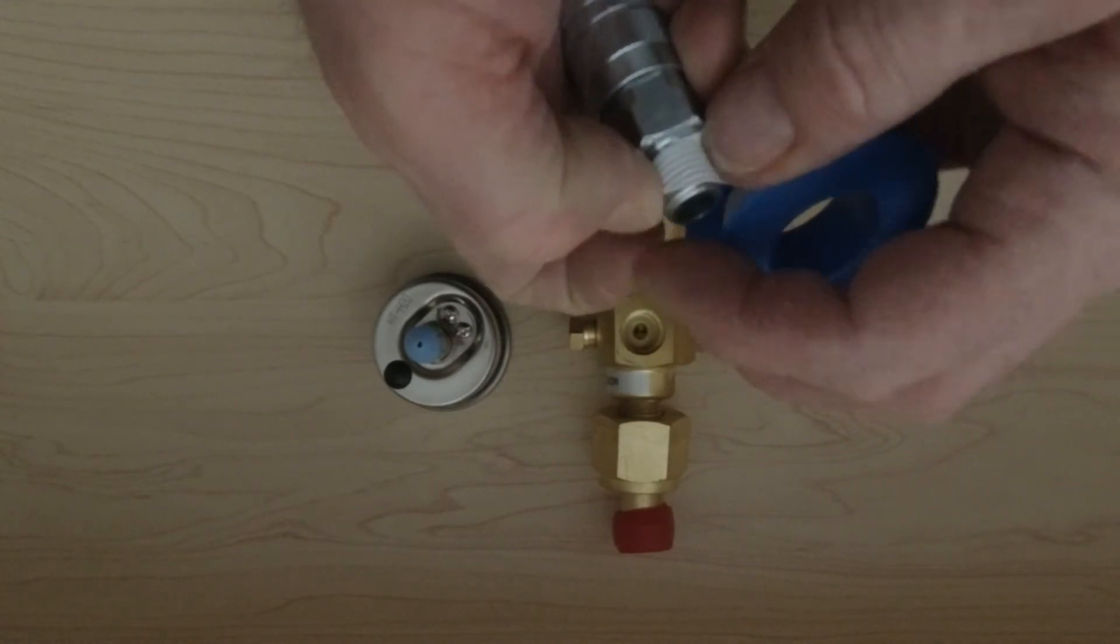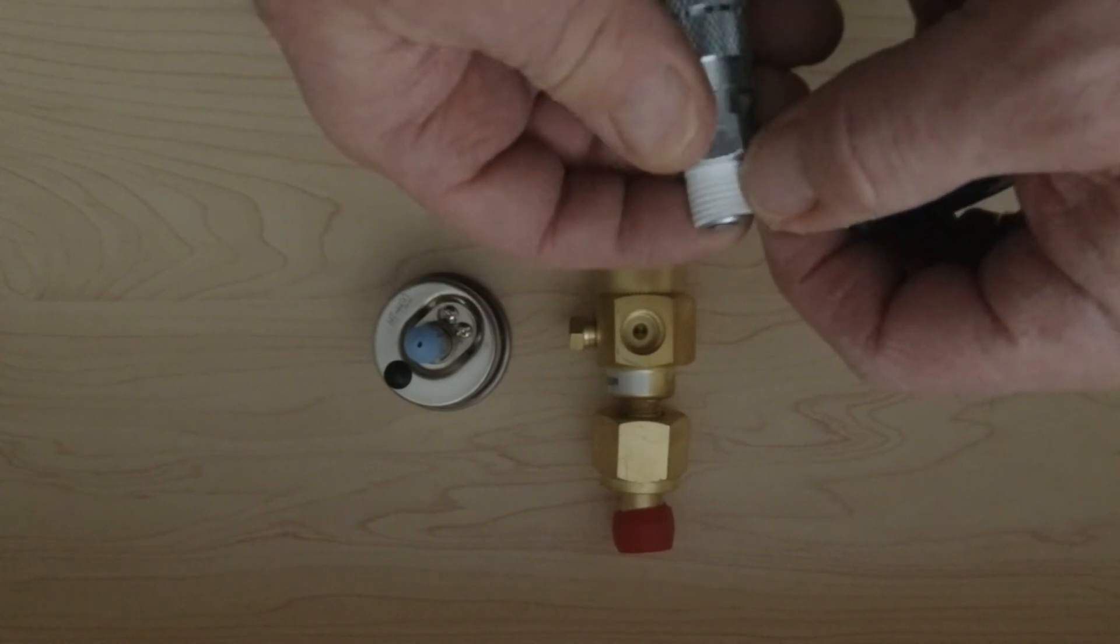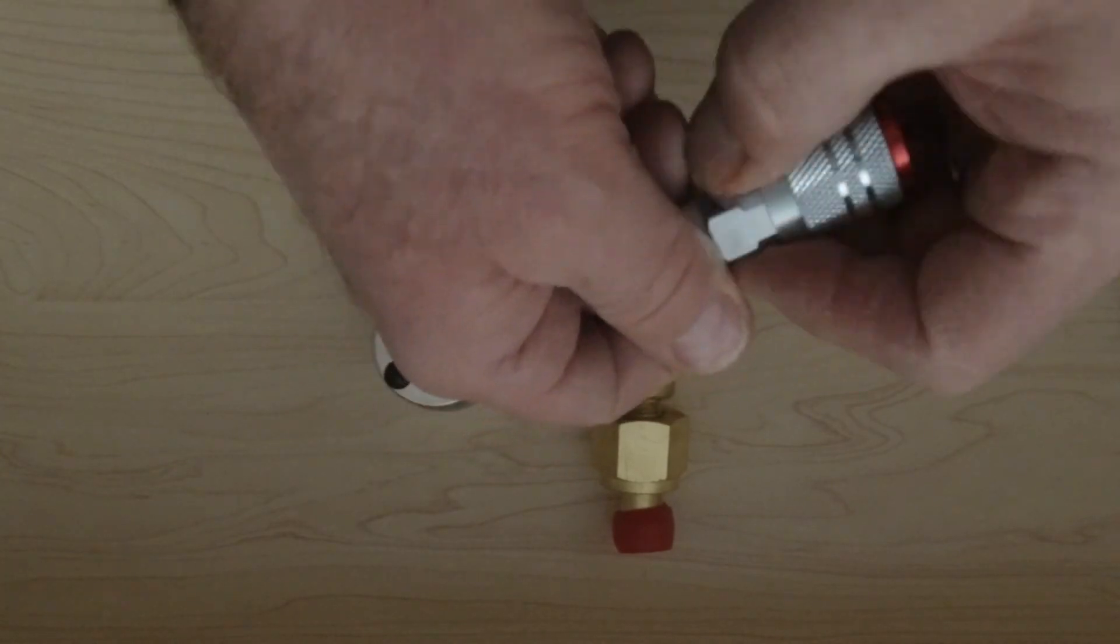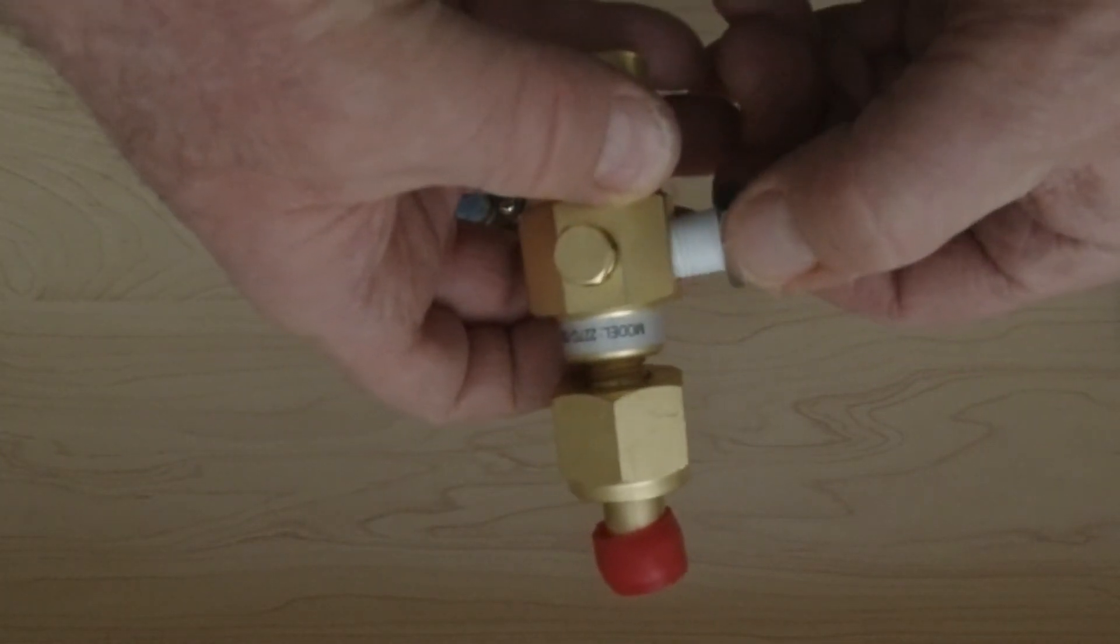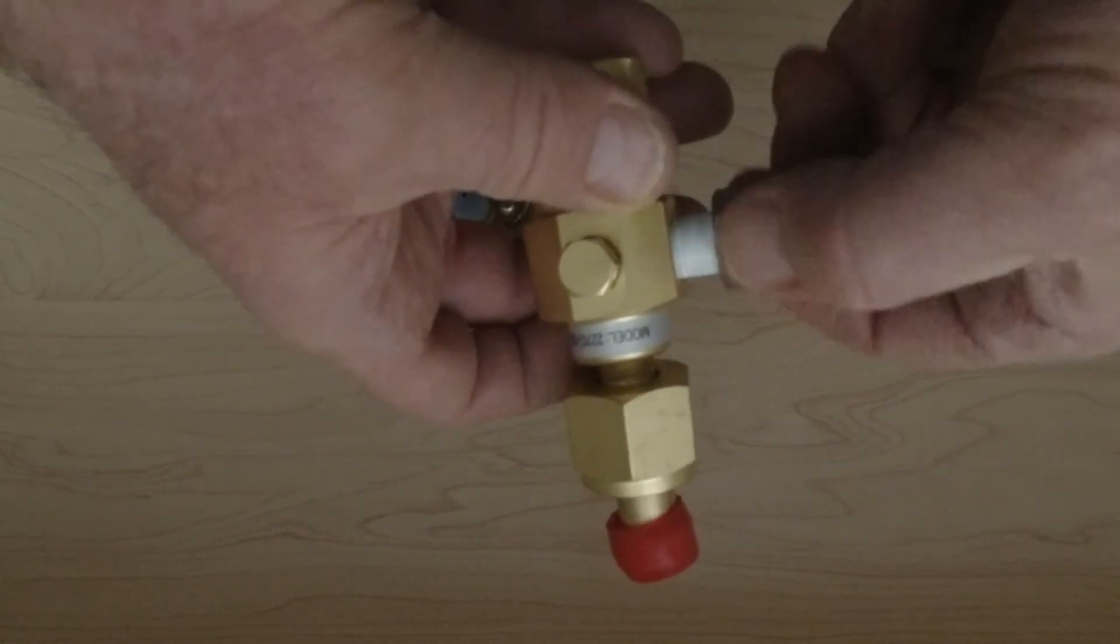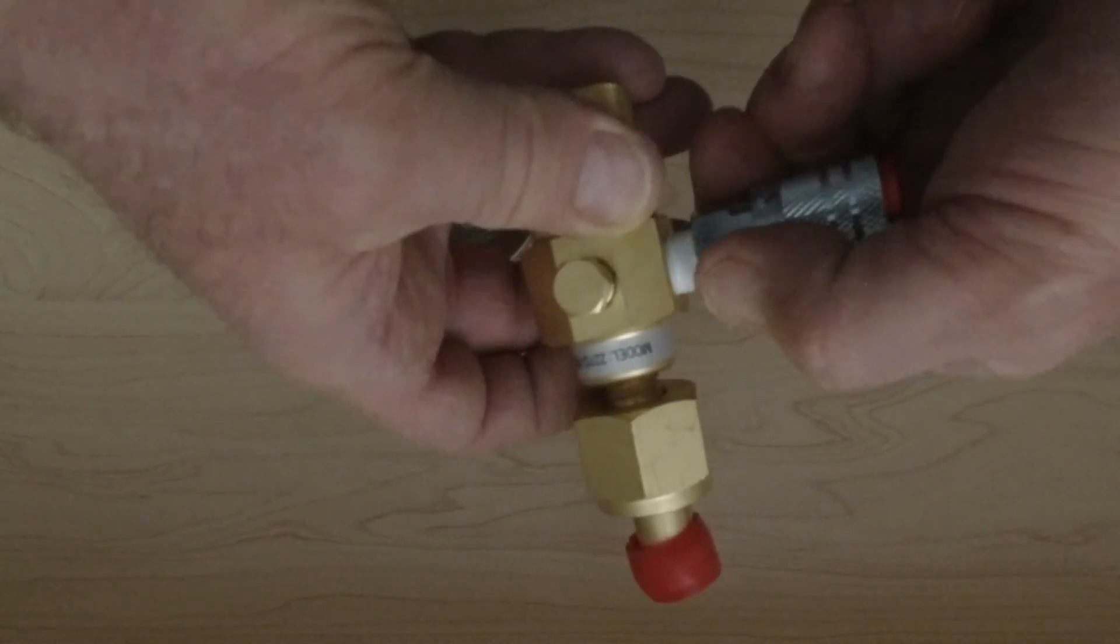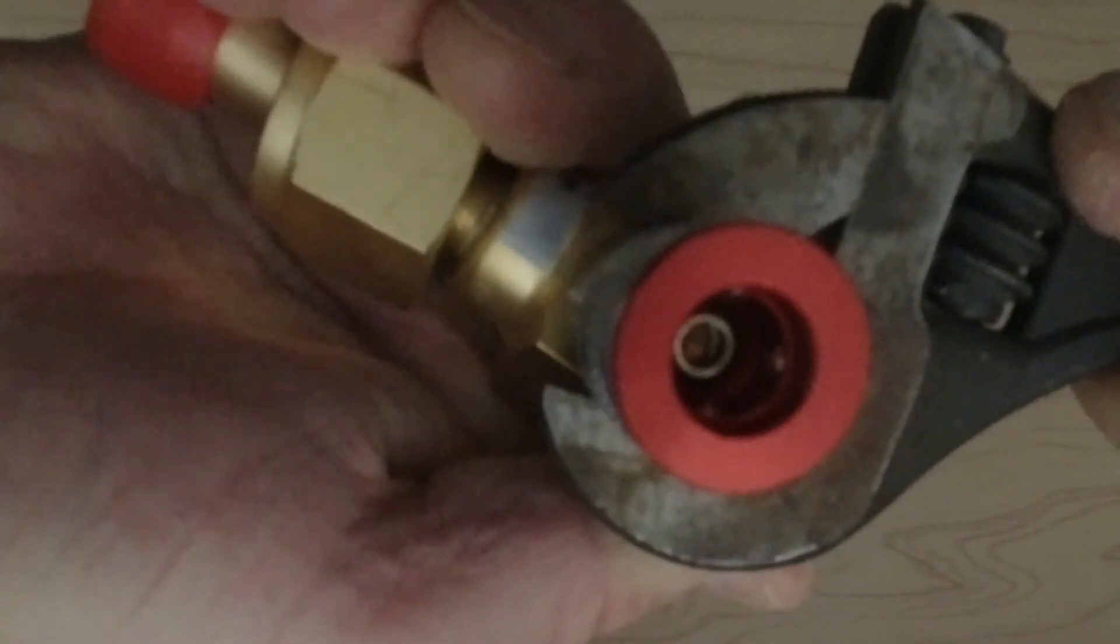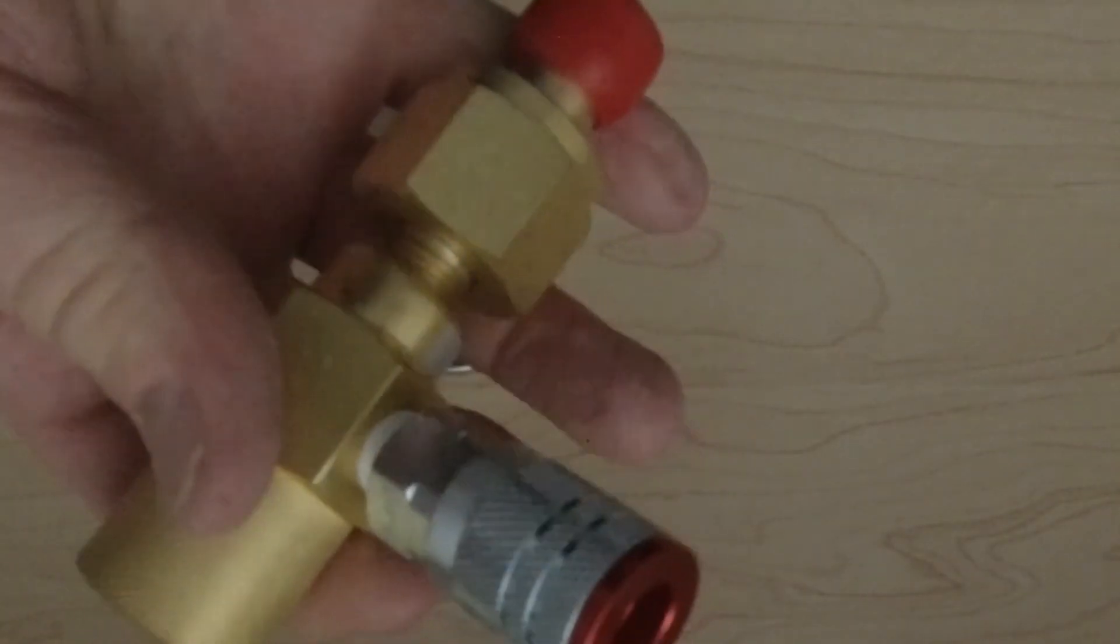Start by adding teflon tape to the thread of the quick connect. Remember to put it on in such a way that as you tighten it that doesn't cause the tape to bunch up. Snug the connection up with the adjustable wrench and that one is done.